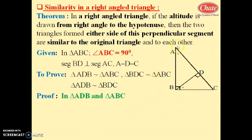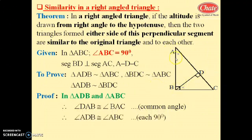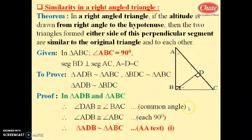In proof, first we take triangle ADB and triangle ABC. In triangle ADB, angle ADB is a right angle; in triangle ABC, angle ABC is a right angle. In triangle ADB and triangle ABC, angle A is common in both triangles, so angle DAB is congruent to angle BAC. Therefore, triangle ADB is similar to triangle ABC by the angle-angle test — this is equation number 1.